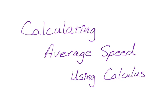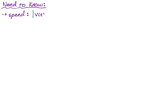In this video we're going to be talking about how to calculate average speed using calculus. There are a couple things you need to know before you get started. The first is you need to know what speed is. Speed is just the absolute value of velocity. So we're going to be given a velocity function, take its absolute value, and that'll tell us the speed function. We also need to know how to deal with average value, because if we're finding average speed, we're really finding the average value of the speed function.